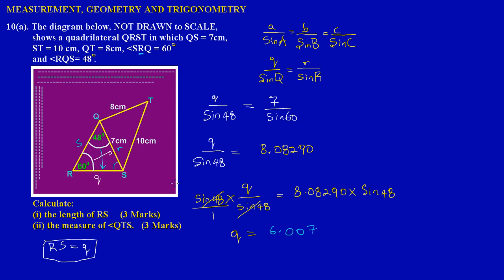Since RS is the same as little q, and we've found little q, we can state that RS is equal to 6 centimeters. In the next video we'll be looking at part two, where we'll use the cosine rule to solve for angle QTS. See you then!